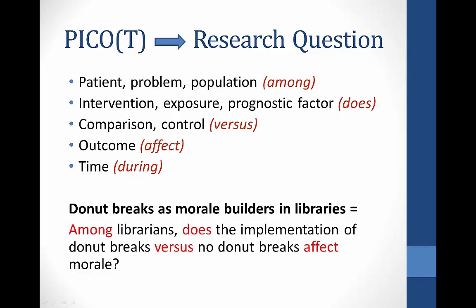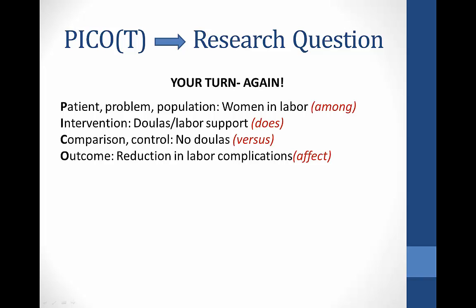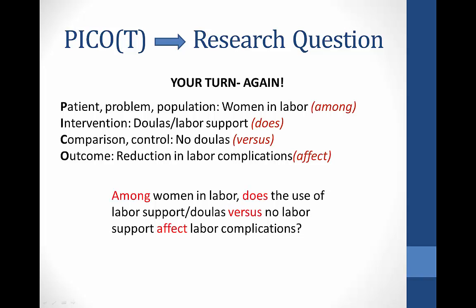This is where I see the real value of the PICO question — not only does it help narrow a topic down, but it also creates this beautiful research question, and that's what students really appreciate. Now it's your turn again with the doula example. I included how we broke this example down in PICO and the little prompts in parentheses as well. So pause the video, write the question out, say it out loud, and then we'll look at how I translated it. So among women in labor — population — does the use of labor support or doulas — intervention — versus no labor support — control — affect labor complications — outcome.